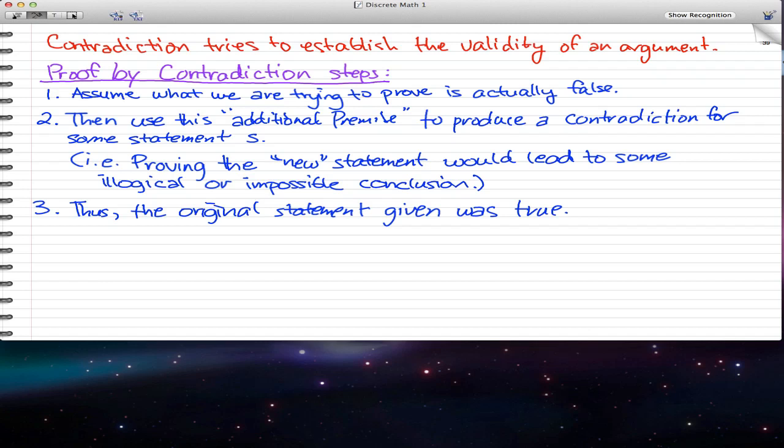Here's what we generally want to establish: P1 and P2, and all the way to Pn, so this implies Q. So this is generally what we want to establish, we generally want to establish that P1 and P2 all the way to Pn, all these premises imply Q.